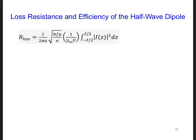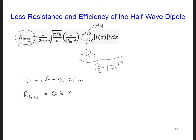Now to be able to calculate the efficiency of this half wave dipole, we also need to know the loss resistance. For this we can use the same equation we came up with earlier. In this case, the integration limits are going to be from minus lambda over 4 to lambda over 4, the full length of the half wave dipole. This integral evaluates to lambda over 2 times i naught squared. Since lambda is c over f equals 0.125 meters, we're going to get r loss is equal to 0.6 ohms. Sorry, this should be divided by c over f. So 0.6 ohms for r loss.